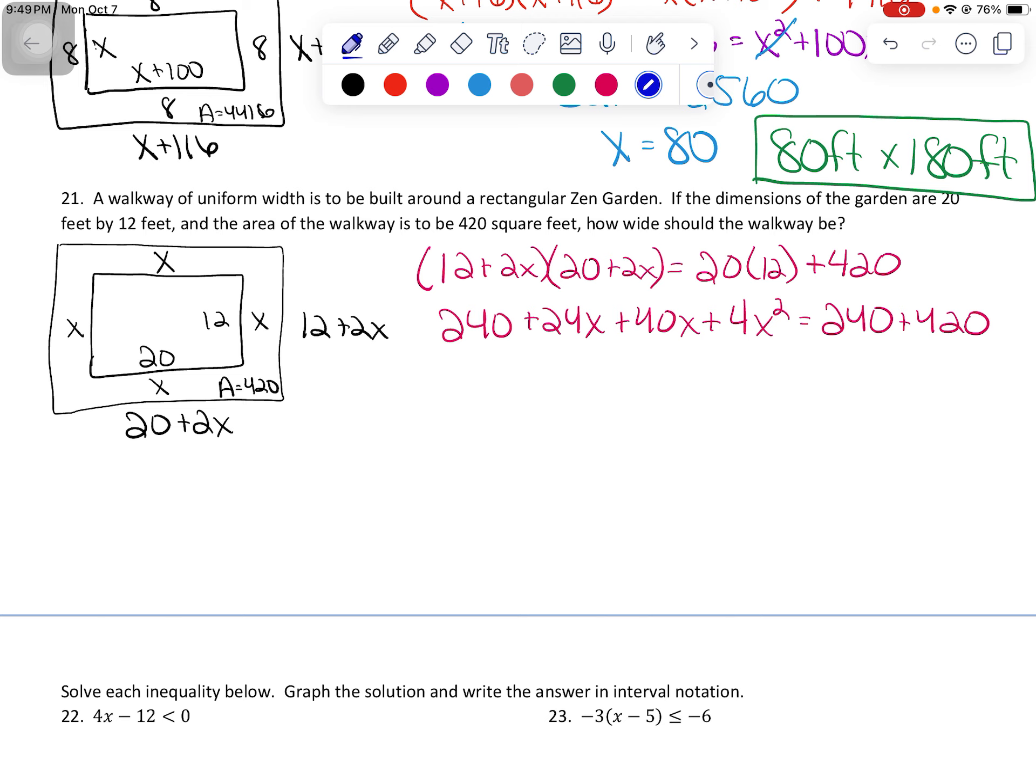This one, unfortunately, we're not going to be able to get rid of the X squareds. So I want to pull literally every term to the left side and put it in standard form. So that means I'm going to move the X squared first. I'm going to combine the two X terms. And I'm going to pull all of the constants over. So 240 minus 240 minus 420, so that I get this whole thing equal to zero.